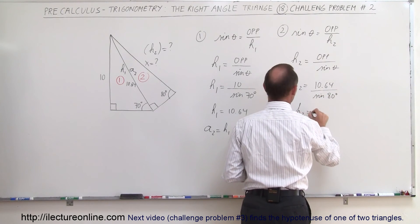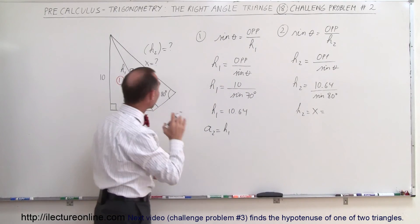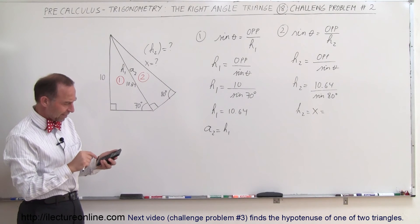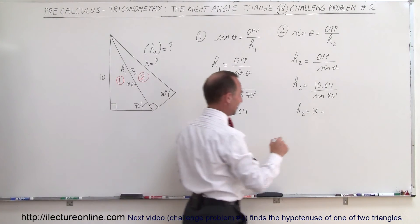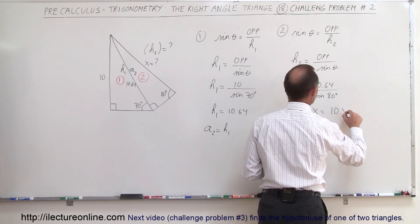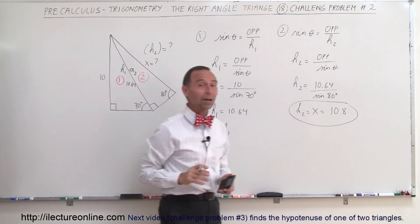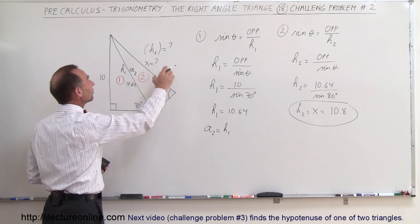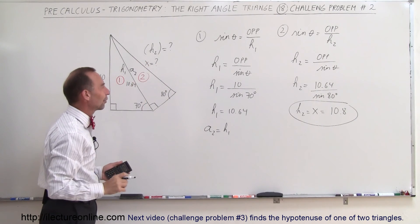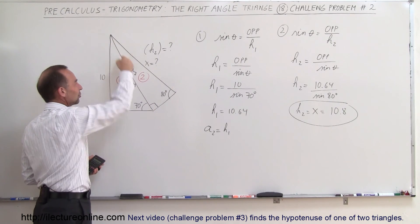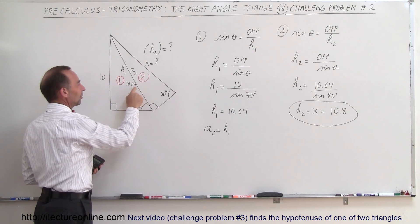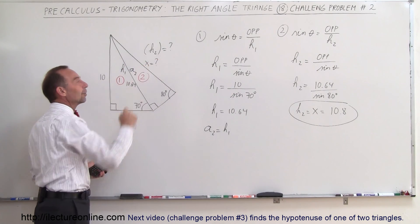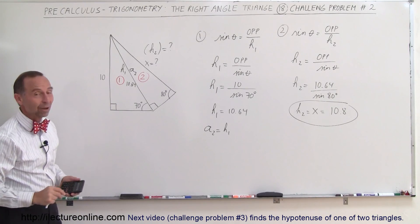Now we'll have our final answer. Remember, H two was the x that we're looking for — the unknown side. So we take 10.64 divided by the sine of 80, and we get 10.8. That's ultimately what we're looking for in this problem. We just had to go through a series of trigonometric identities — finding the common side from triangle one, then using that information in triangle two to find the unknown.